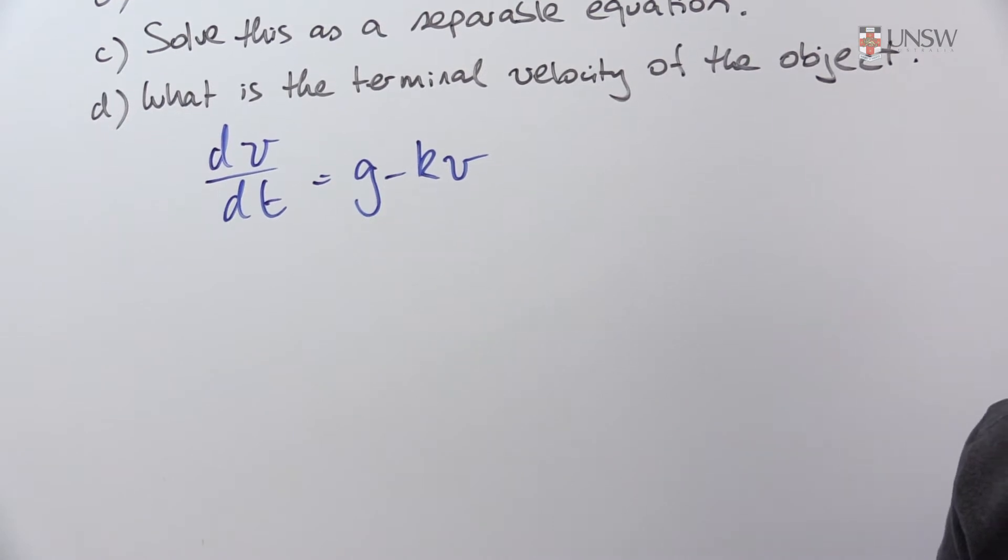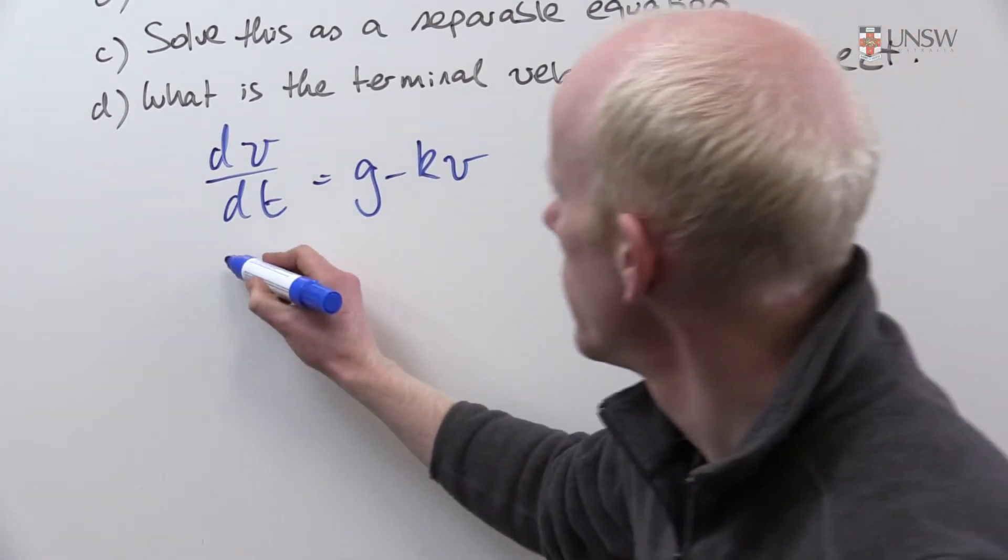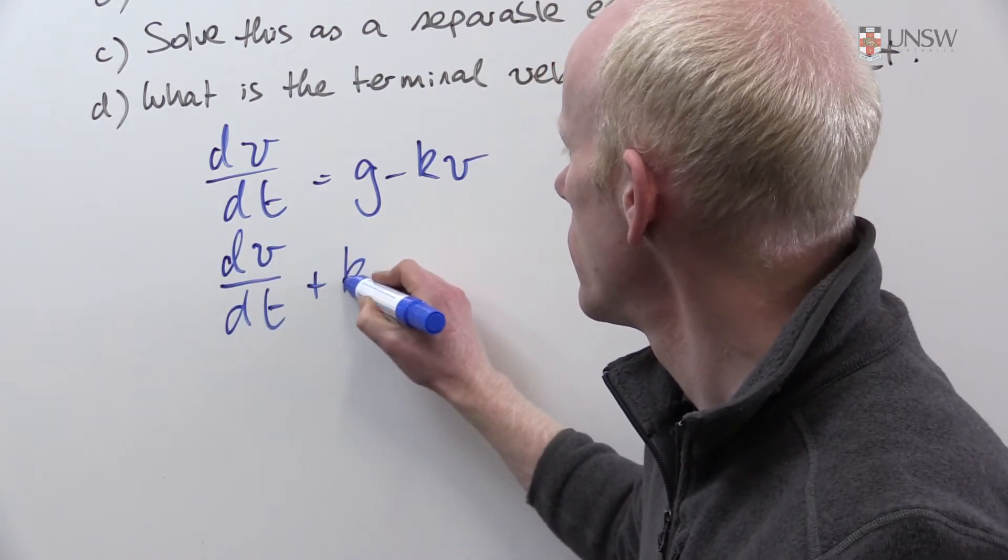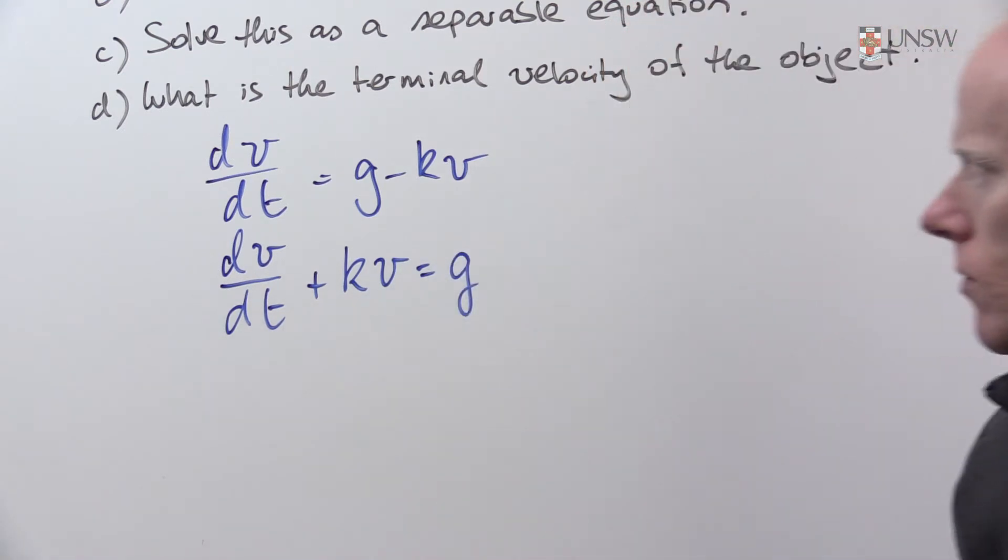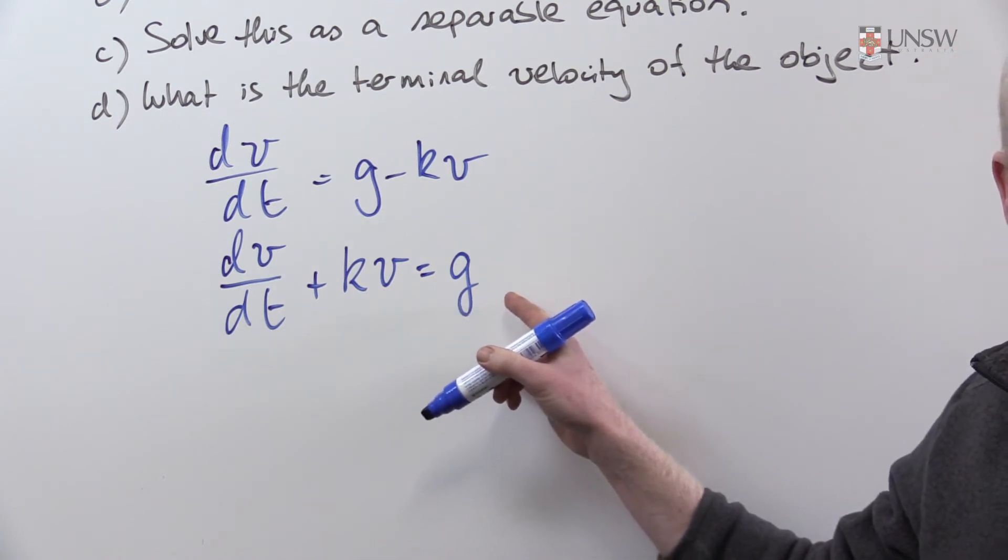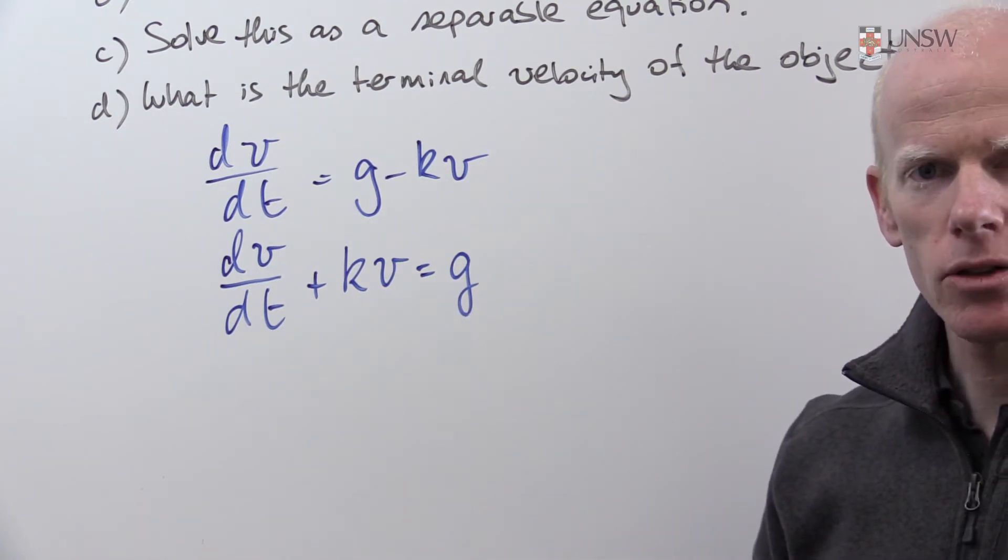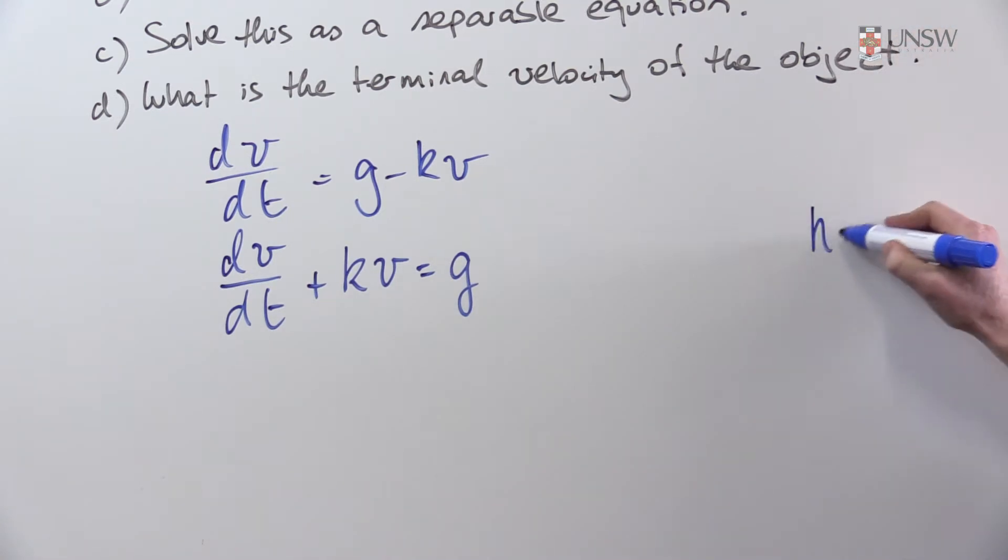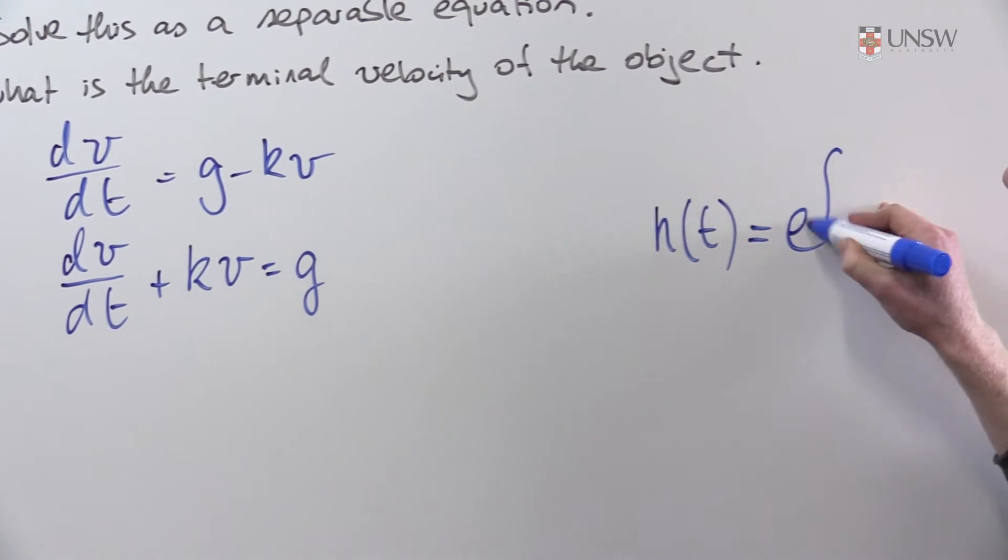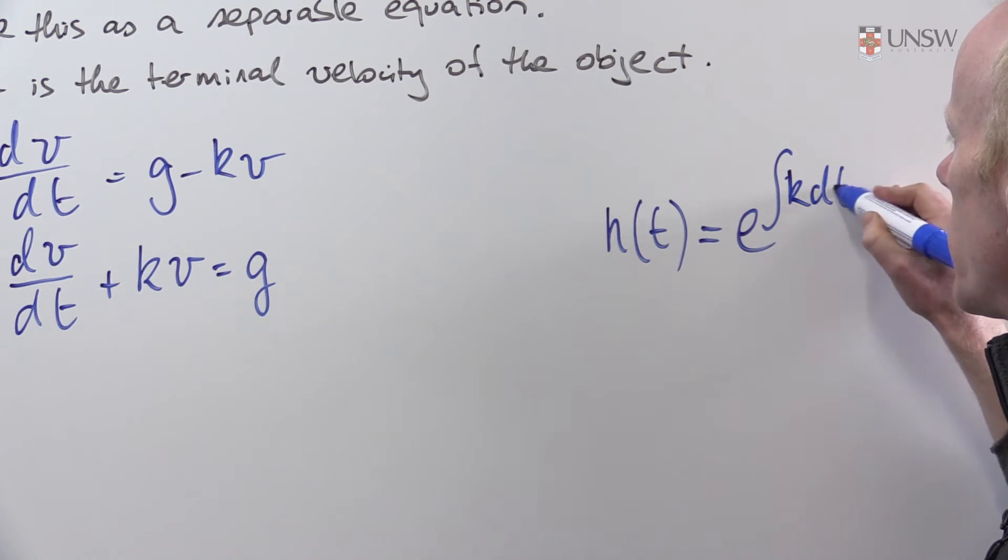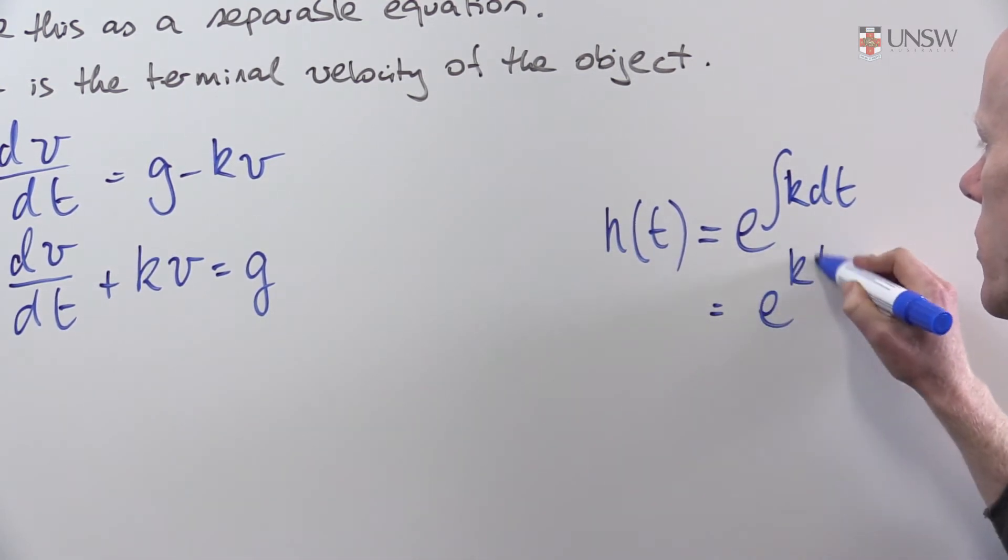The first thing I'll do is move the v-terms to the left-hand side. You can see clearly that I have a linear differential equation in terms of v here. The method of solution will involve determining an integrating factor, H of t, which is defined to be e to the power of the integral of the coefficient of v with respect to time, which is e to the kt.